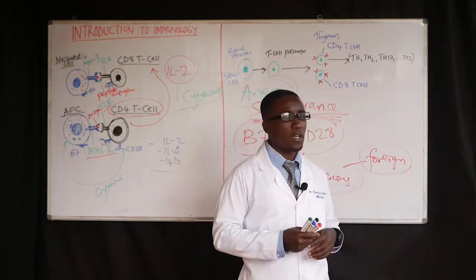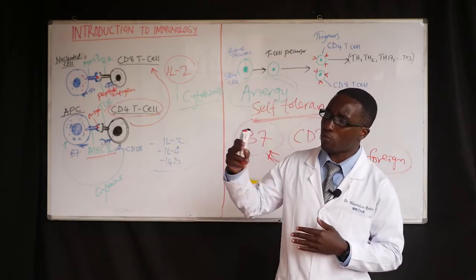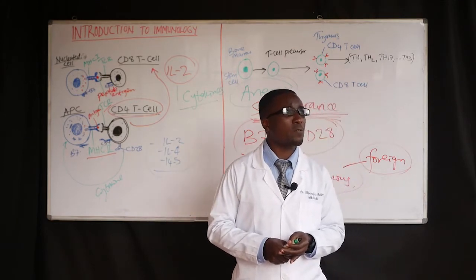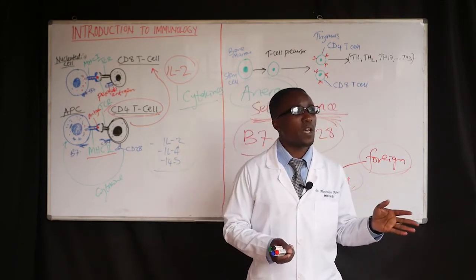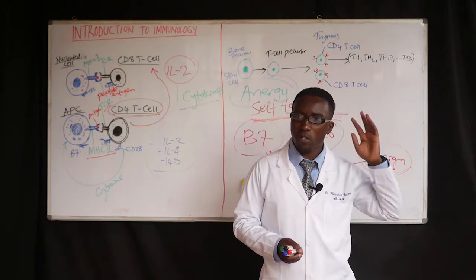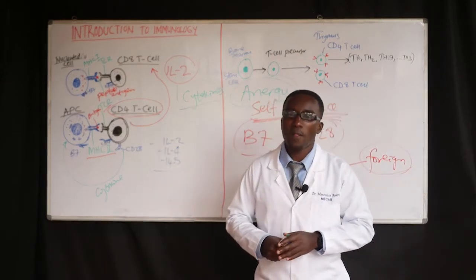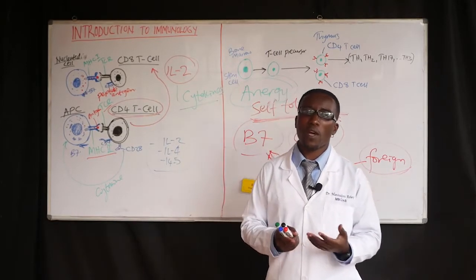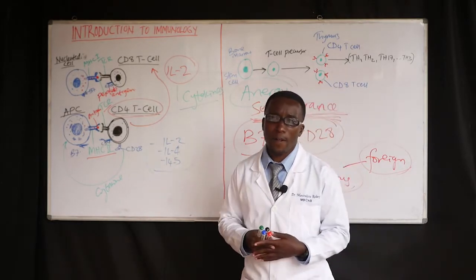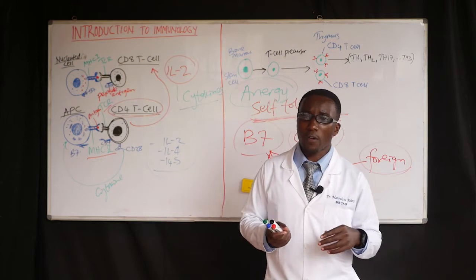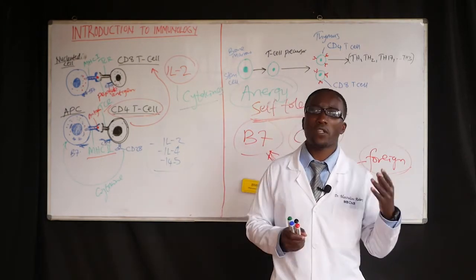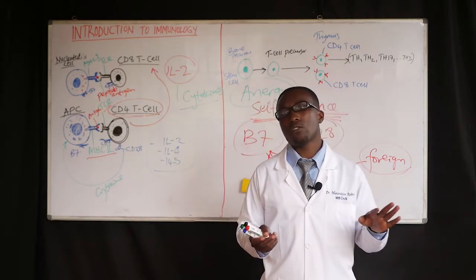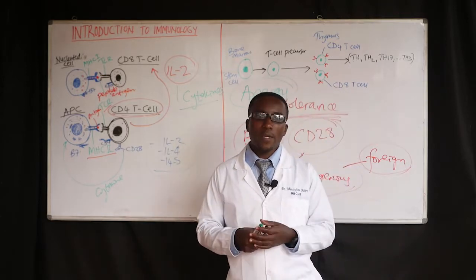The primary role of the T-helper 0 cells — the naive ones — is to expand the immune responses by producing cytokines that promote lymphocyte growth and activate dendritic cells, using cytokines like interleukin-2, interleukin-4, and interferon gamma.